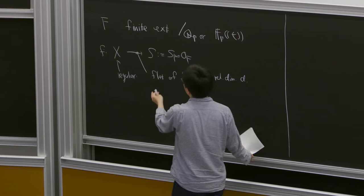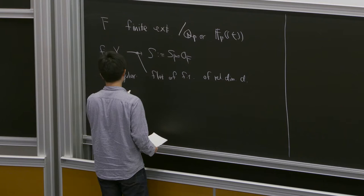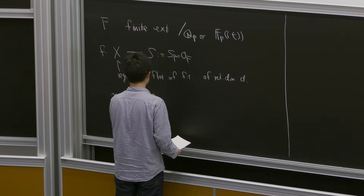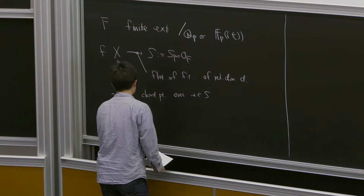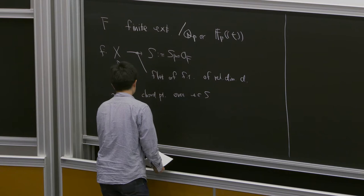And then we assume an isolated singular point. That is, I write x, so this is a closed point over the closed point of S, such that X is smooth outside this point.